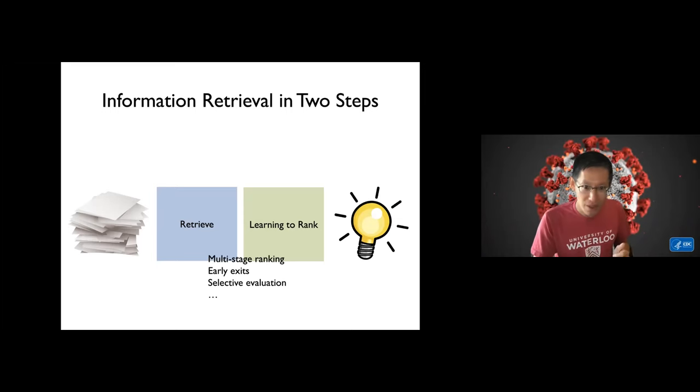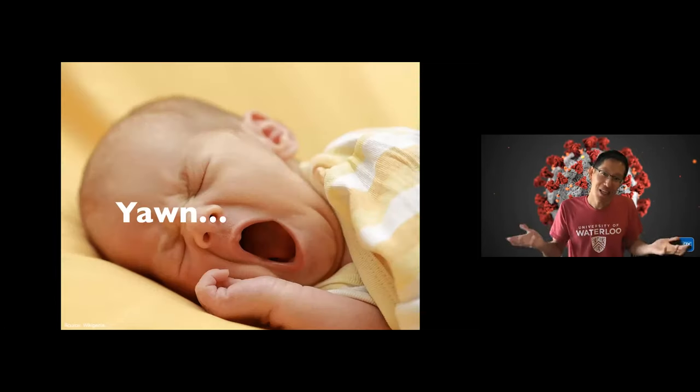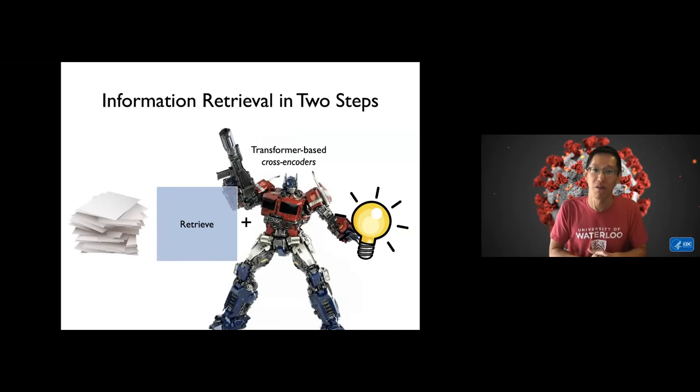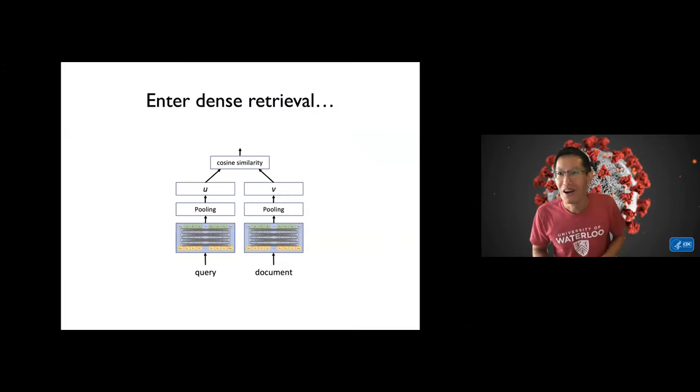For the last couple decades this has been something like learning to rank using features, and there are lots of variations that are worth exploring and reasonably interesting. So multi-stage ranking, early exits, speculative evaluation, things like that. But once you sort of work on these topics for a while, you realize that there are variations on a theme and they get boring after a while. Recently learning to rank has been supplanted by BERT or more generally transformer-based encoders, but the general pipeline recipe hasn't changed that much. So it's still kind of boring.